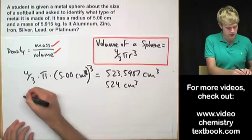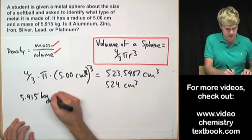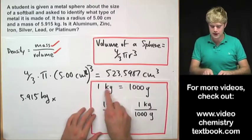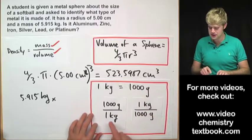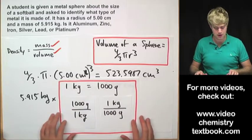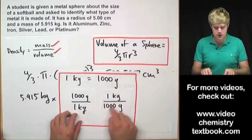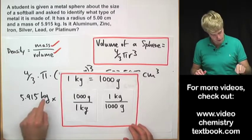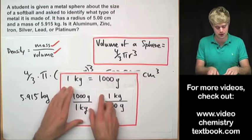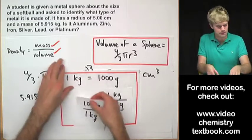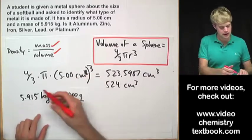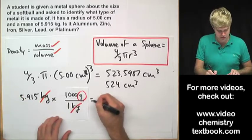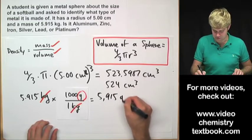So we'll start with 5.915 kilograms and I'm going to need to multiply that by a conversion factor that gets rid of the kilograms. So 1 kilogram equals 1,000 grams and that means that I can write these two conversion factors to go between grams and kilograms. Which of these conversion factors am I going to want to use? I'm going to want to use the one that gets rid of kilograms which are on the top here so I'm going to choose the one that has kilograms on the bottom. So we will use this one and now I can multiply these together, kilograms cancel out and I'm left with grams. So all I have to do is multiply this by 1,000 and I get 5,915 grams.